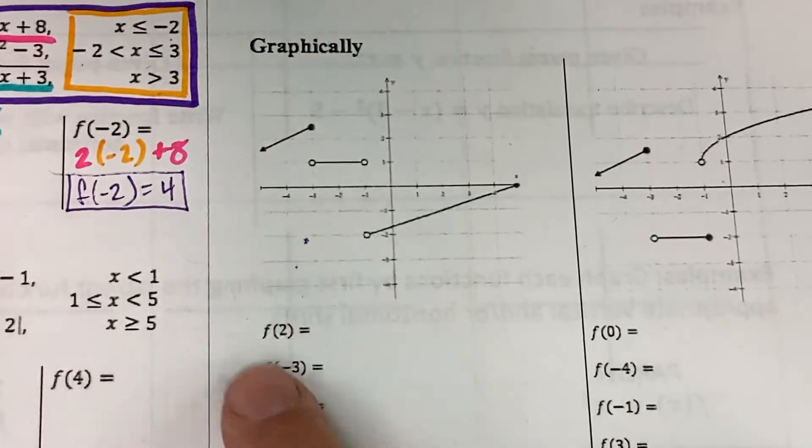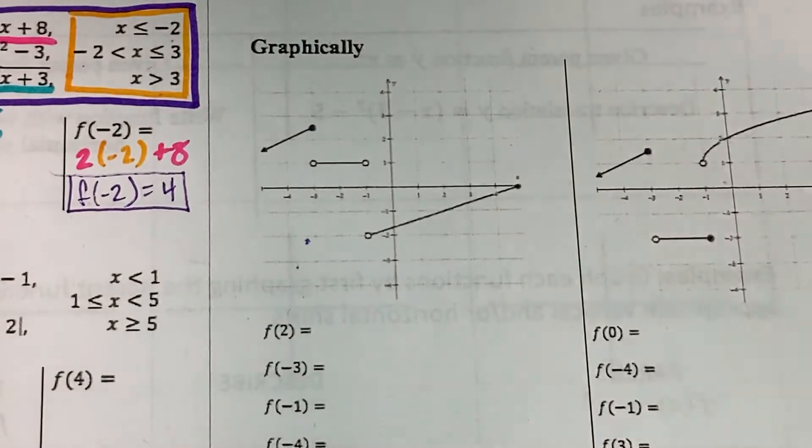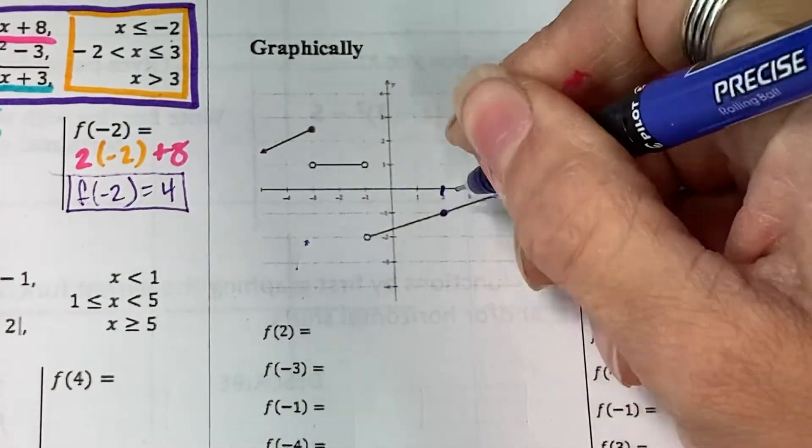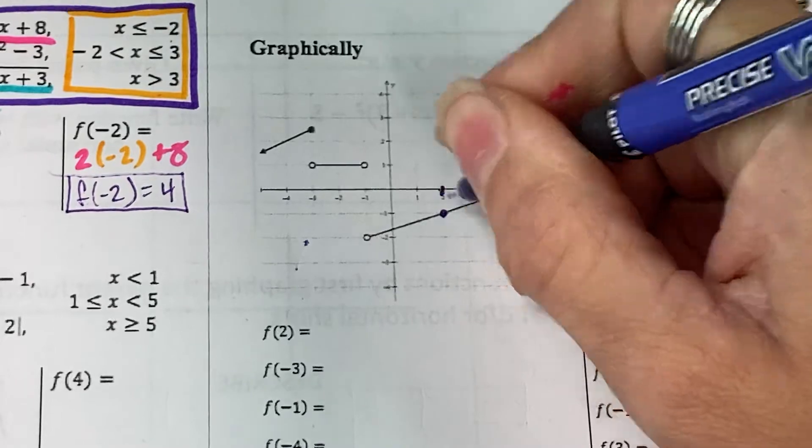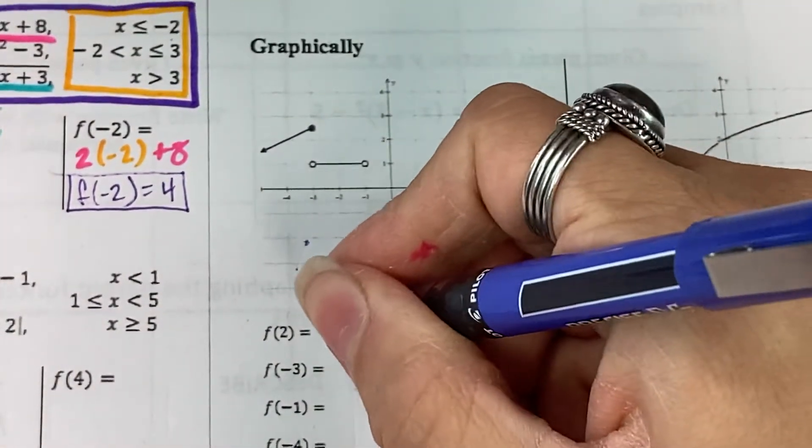All right, folks. So, if I want to find f of 2, we're going to go to that input at 2 right here and see where we lie on our function. So, at f of 2, we are getting an output of negative 1. Easy enough.